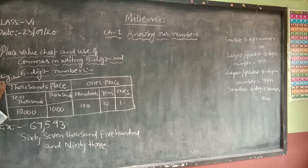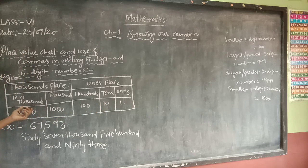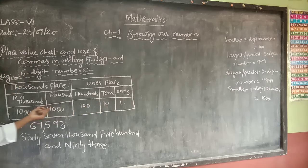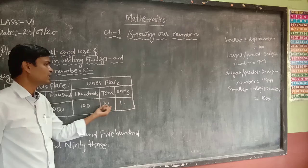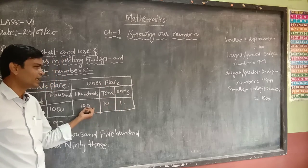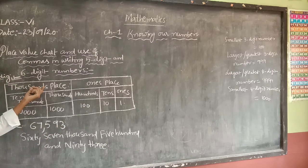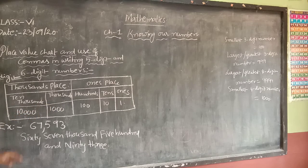Once again, a five-digit number consists of the ones place and the thousands place. In the ones place we have ones, tens, and hundreds. In the thousands place we have thousands and ten-thousands.